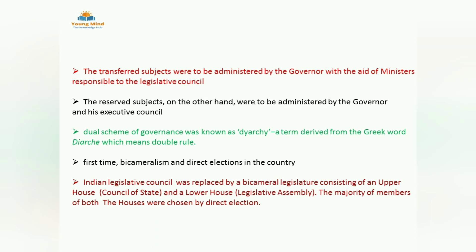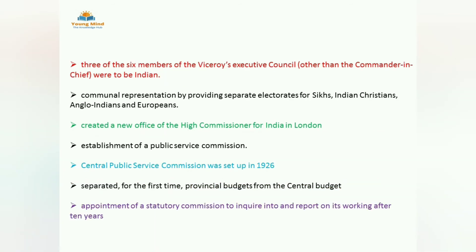In the six members of the Viceroy's Executive Council, out of six members three members were Indians. But here too, majority was in British hands — the head of the council was the Viceroy, and when it came to voting, the Viceroy's vote would always be on their side. Like this, they held control. Next is communal representation.